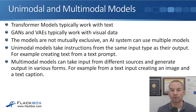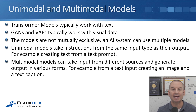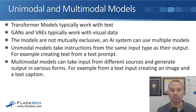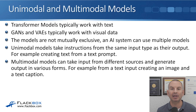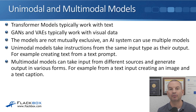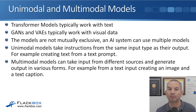Unimodal models take instructions from the same input type as their output — for example, creating text from a text prompt. Multimodal models can take input from different sources and generate output in various forms. For example, from a text input you could create an image and also a text caption for that image.